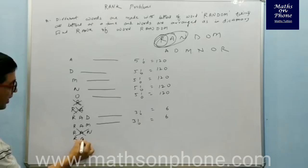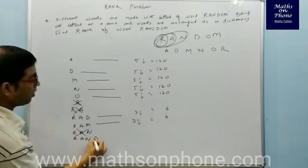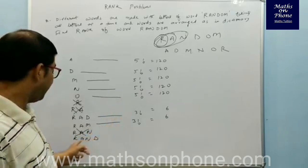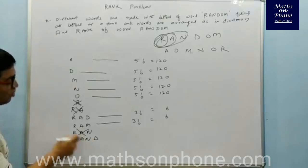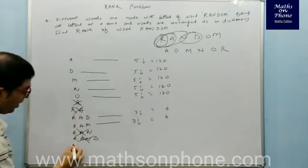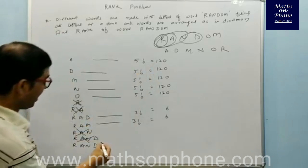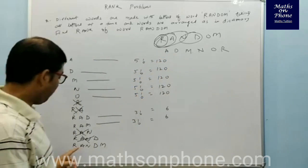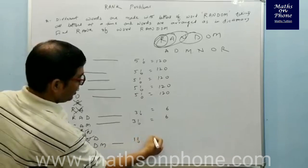Now I start with R-A-N, then pick D. D is the actual next letter in alphabetical order (A has been used), so R-A-N-D is cancelled. I go further: R-A-N-D, then pick M. Only one letter is left over after fixing four, so it can be arranged in 1! = 1 way.